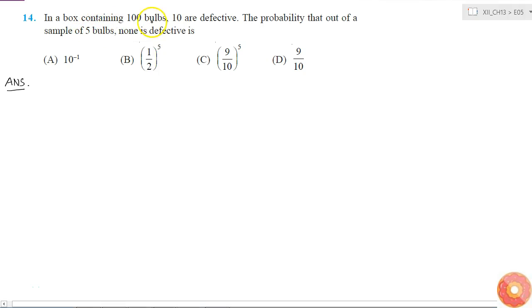In this question we are given that a box contains 100 bulbs and 10 are defective, and we have to find the probability of getting no defective bulbs out of a sample of 5 bulbs.